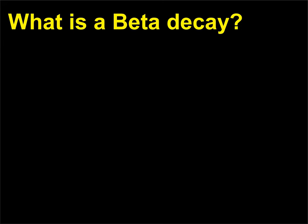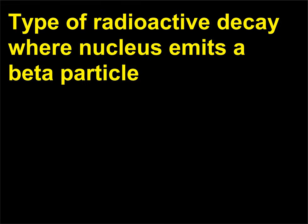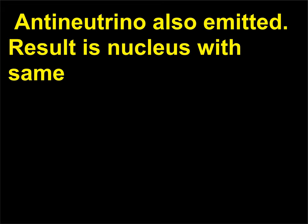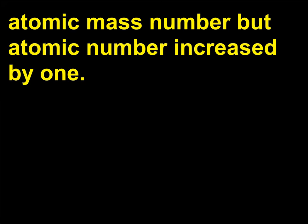What is beta decay? It is a type of radioactive decay where the nucleus emits a beta particle — an electron — from the change of a neutron into a proton. An anti-neutrino is also emitted. The result is a nucleus with the same atomic mass number but an atomic number increased by one.